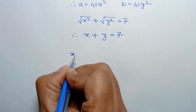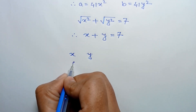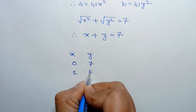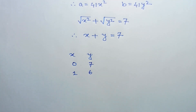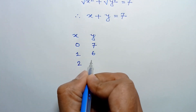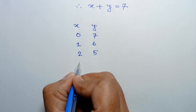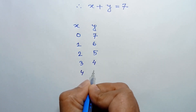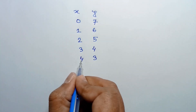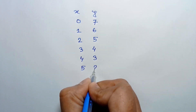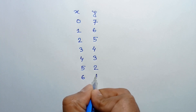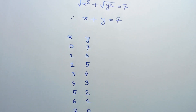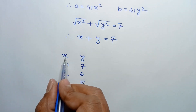The integer solutions for x plus y equals 7 are: x equals 0 and y equals 7; x equals 1 and y equals 6; x equals 2 and y equals 5; x equals 3 and y equals 4; x equals 4 and y equals 3; x equals 5 and y equals 2; x equals 6 and y equals 1; and x equals 7 and y equals 0.